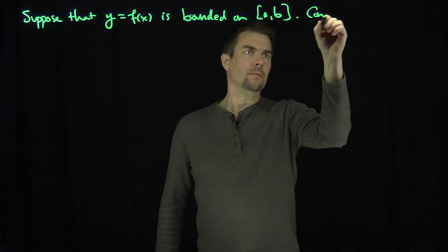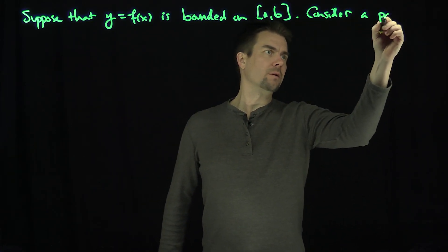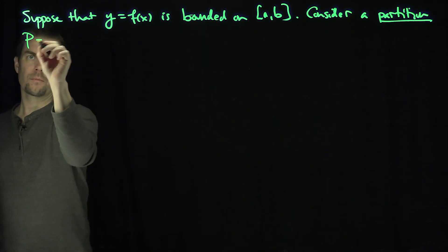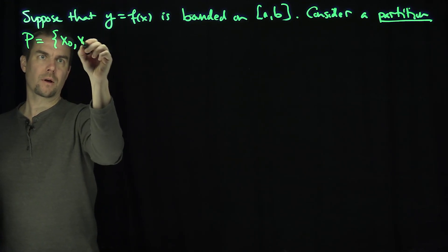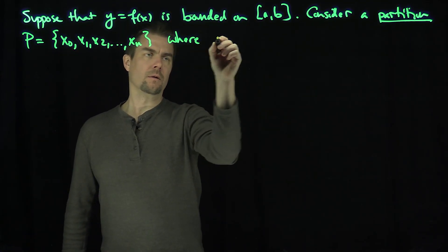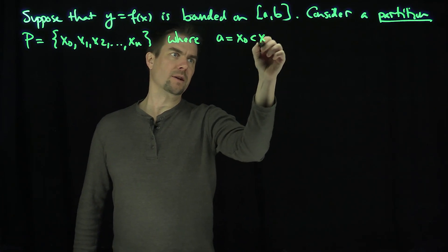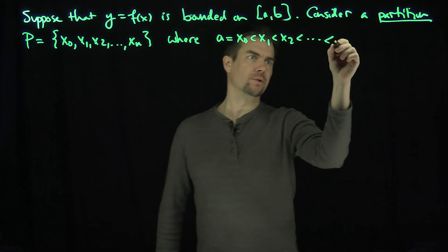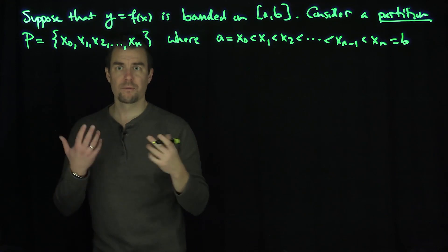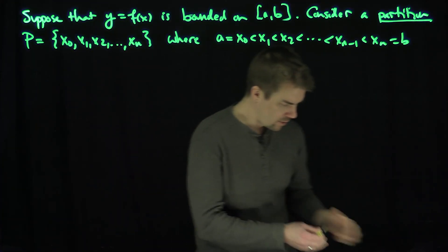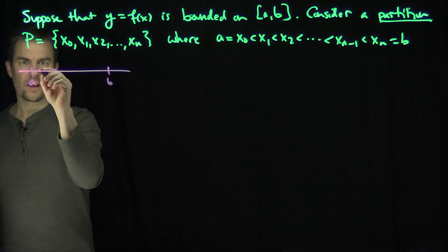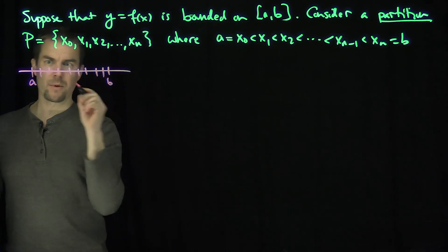Consider a partition P, which is a collection of points x0, x1, x2, all the way up to xn, where a = x0 < x1 < x2, monotonically up to x_{n-1} < xn = b. So a partition of [a, b] is just a sequence of points that increase from a to b.